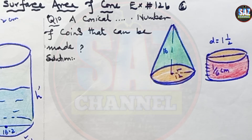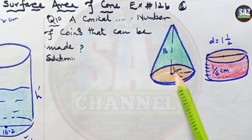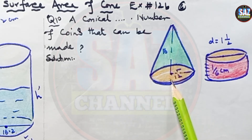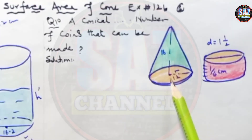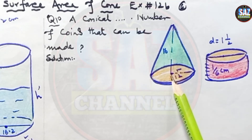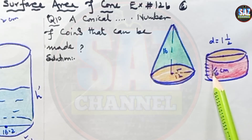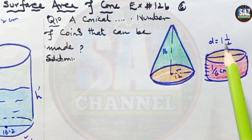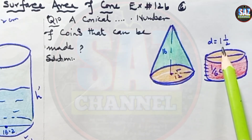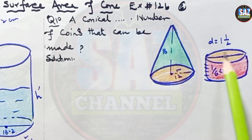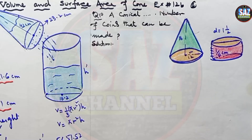Question 10 says: a conical block of silver has a height of 16 cm and base radius 12 cm. This silver is melted to form coins of thickness 1/6 cm and diameter 1½ cm (1.5 cm). Find the number of coins that can be made. Let's try to understand the question with the help of a diagram.